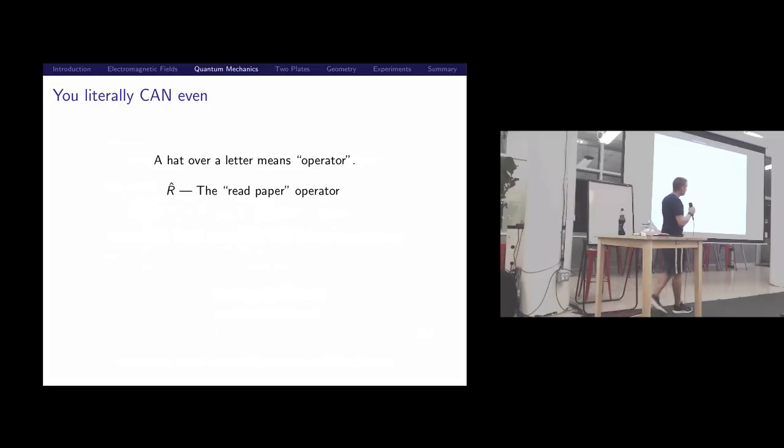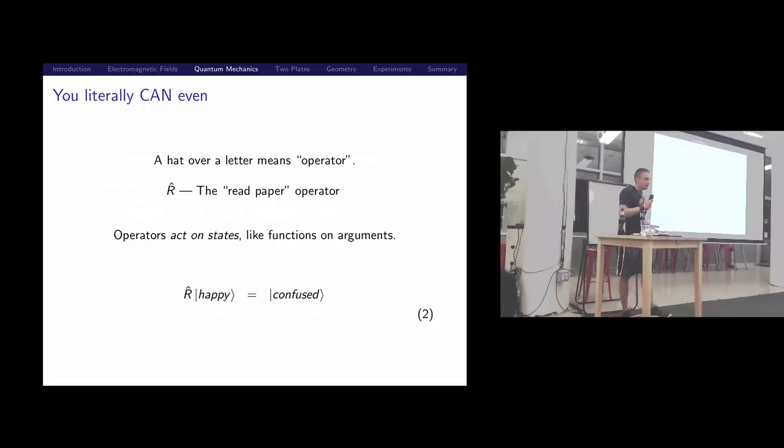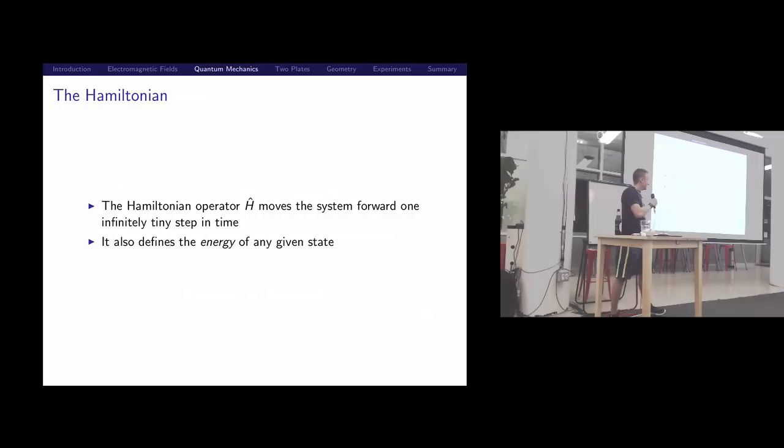The other new piece of notation you need is this little hat here. This denotes something called an operator. All the things in quantum mechanics that you might want to do to a state are represented as operators. When an operator hits a ket, it transforms it. So before you came to this meetup, you were all probably living happy lives. Then you read the paper and you became confused. This is how to read quantum mechanics papers.